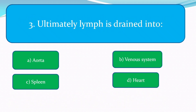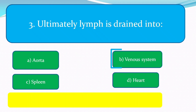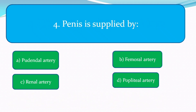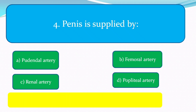The next question: ultimately, lymph drains into the venous system. The vessel supplied is the pulmonary artery. The correct answer is the pulmonary artery.